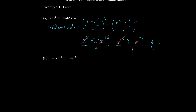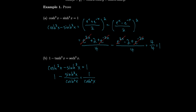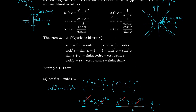In order to prove our other identity, let's start with the identity we just proved: cosh² − sinh² = 1. We can divide everything by cosh², so cosh²/cosh² = 1, minus sinh²/cosh². That gives us 1 minus tanh².